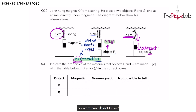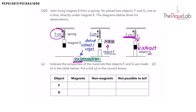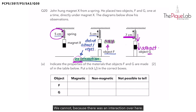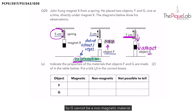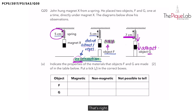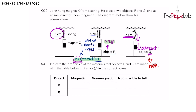So what can Object G be? Can we say it is a non-magnetic material? No, because there was an interaction — the magnet moved downwards and attracted Object G. So G cannot be a non-magnetic material. Could Object G be a magnetic material? Yes — magnets attract magnetic materials, so G could be a magnetic material.